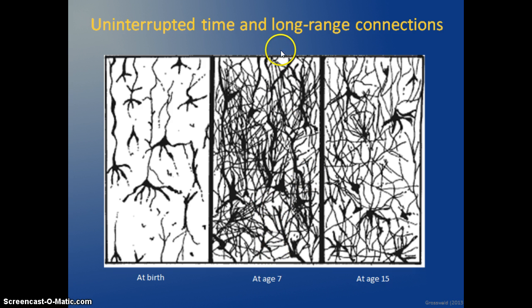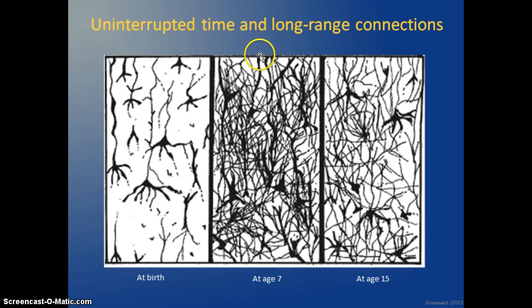Consider a child around age seven with this tangle of connections, watching SpongeBob or another fast-paced show. They start to process — boom, something changes; boom, something changes again. They never get a chance to go all the way into the long connections. They're always interrupted: short, short, short, short. That's one way to think about how fast-paced media can affect brain connectivity.